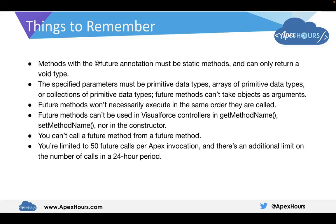The specified parameters must be primitive data types. Future methods cannot accept non-primitive data types like S-object types such as Account or Contact. This is because future methods run asynchronously and only execute when resources become available. For example, if you call a future method at 12:05 and it executes at 12:10, in the meantime any S-object record could have been manipulated by someone. That is why non-primitive data types cannot be used as parameters.